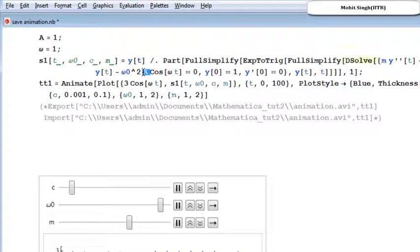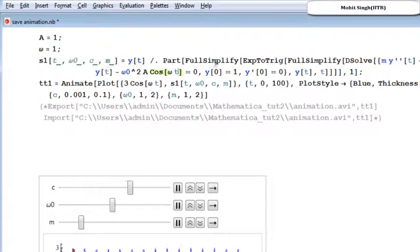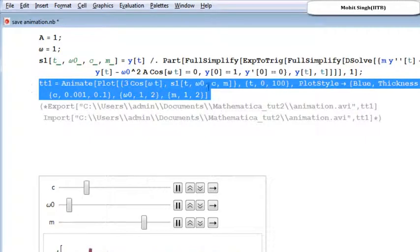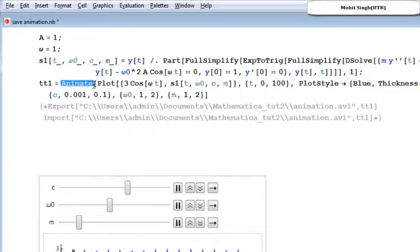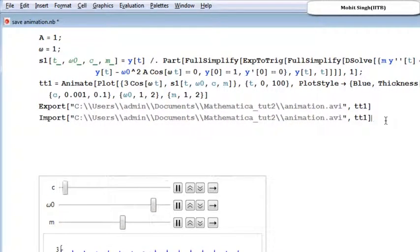So we can simply save the output of desol command in a movie. To save a movie of output of desol simply we can use this animate command. Earlier we have used manipulate command, here I am using animate command, then further you can export it and import it by using this command.